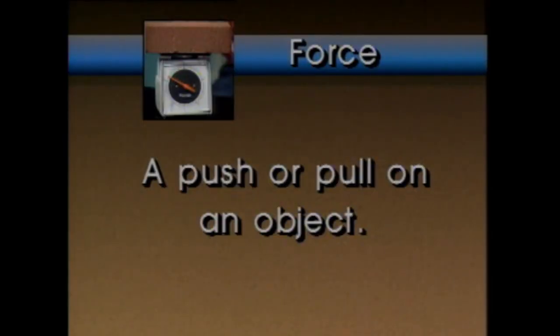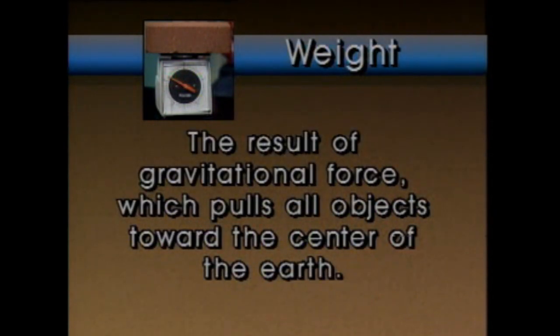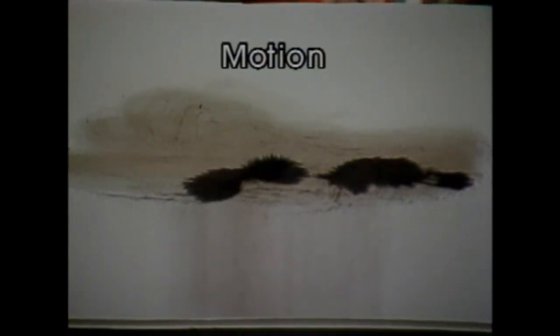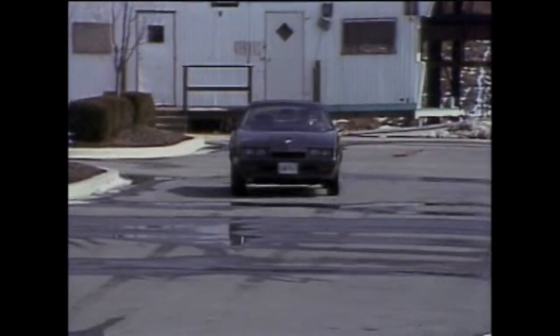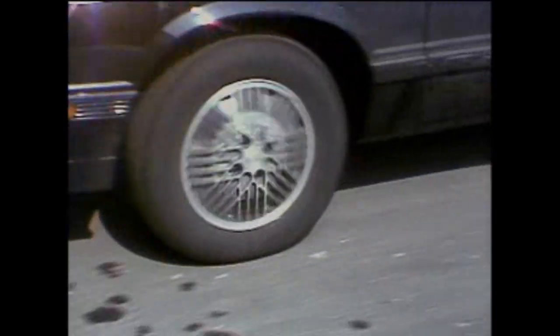Let's begin our discussion of force and motion by defining a few terms. Force can be defined as a push or pull on an object. For example, weight is the result of gravitational force which pulls all objects toward the center of the earth. Like gravity, all forces are invisible. For example, if we sprinkle iron filings on a piece of cardboard and move a magnet underneath the cardboard, the filings move because of magnetic force, but we can't actually see the force. What we can see is the action that results from the force. This resulting action is called motion. Motion can be defined as a body changing position. Applied forces can have several effects on motion, including starting a motion, changing the direction of a motion, or stopping a motion.